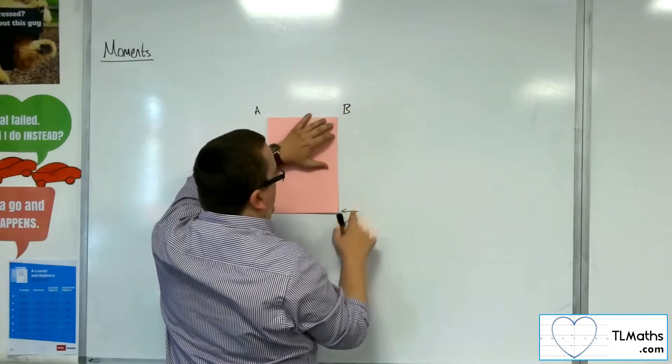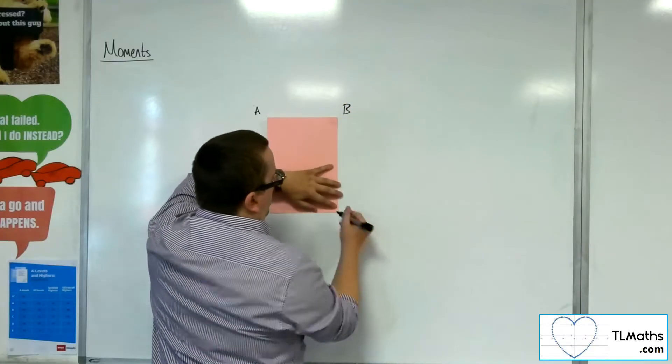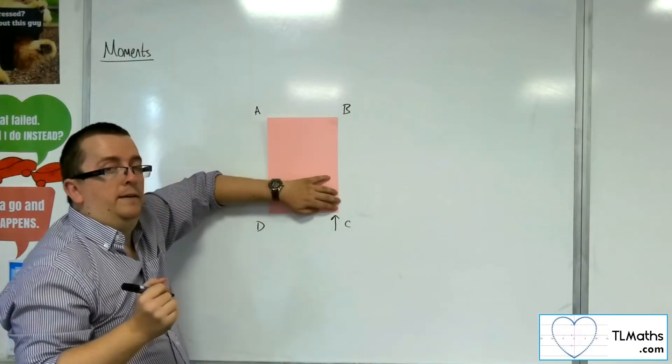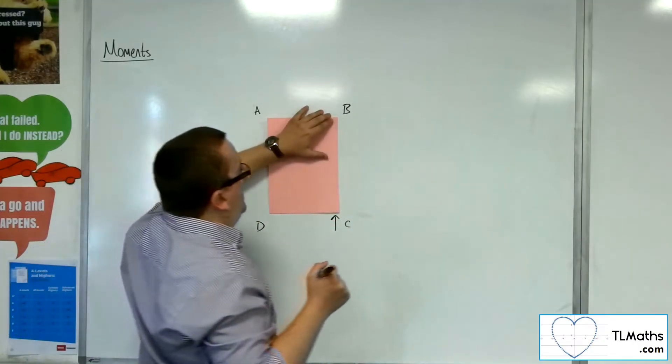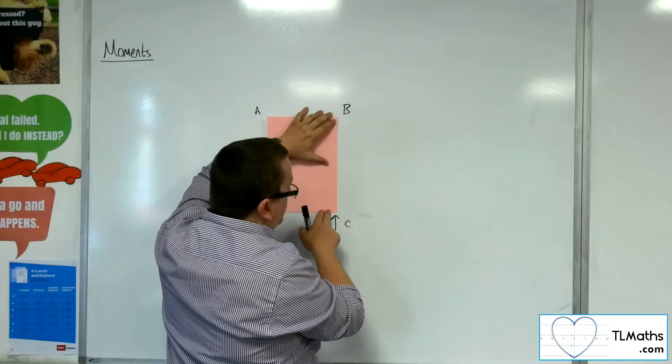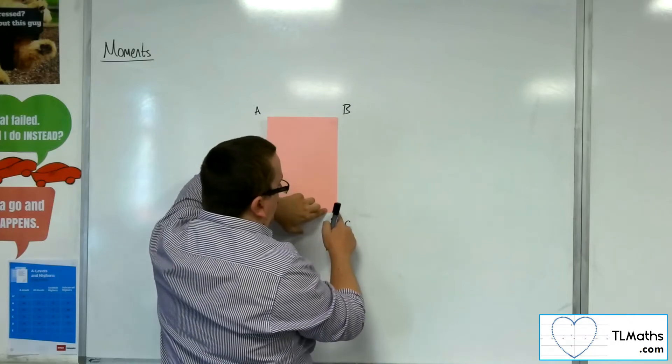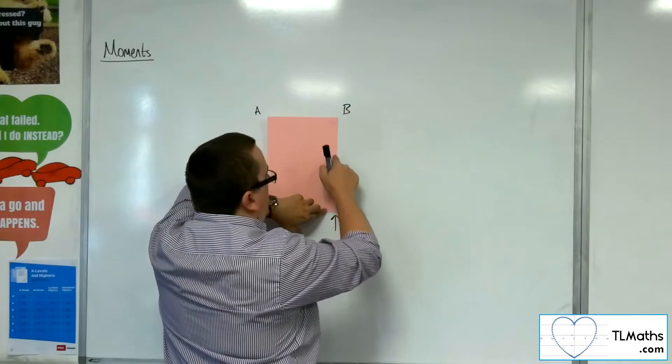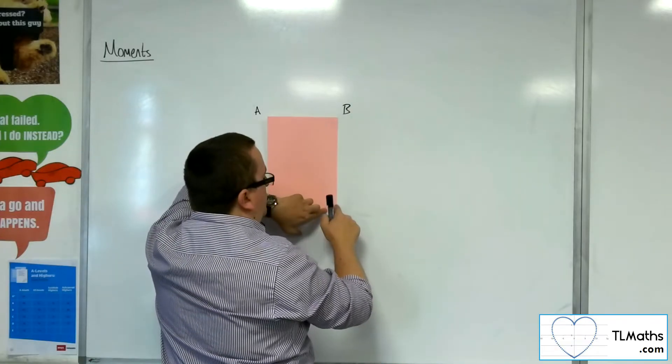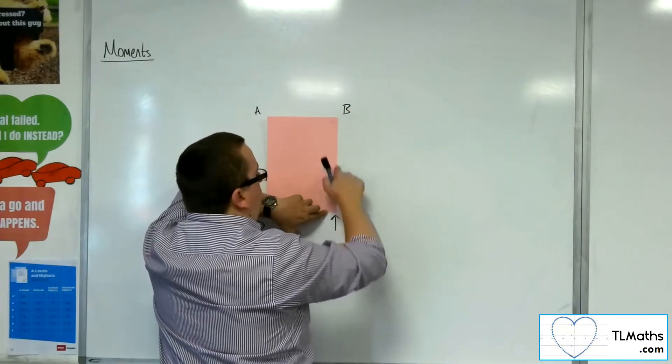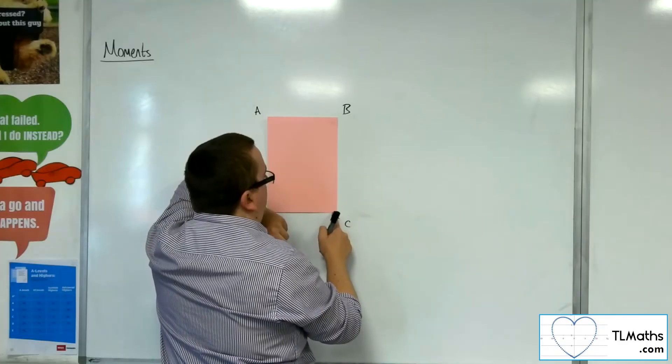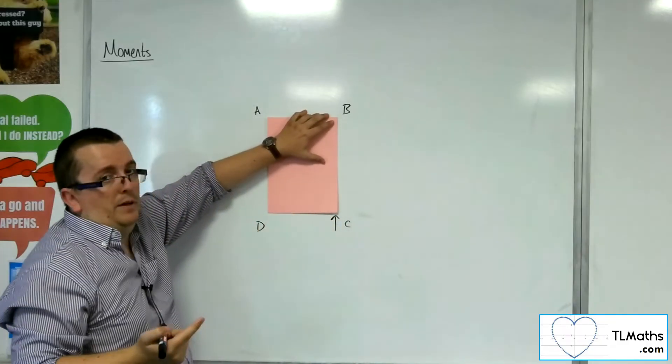If I instead pushed this way, now what would happen is that taking moments about B - if I pushed it upwards with a dotted line upwards - you can see that pushing it that way won't move the laminar.